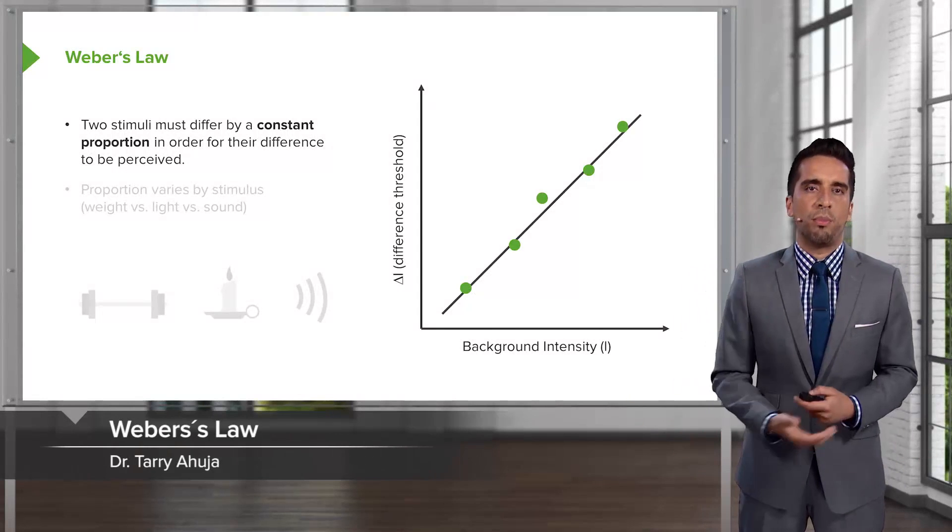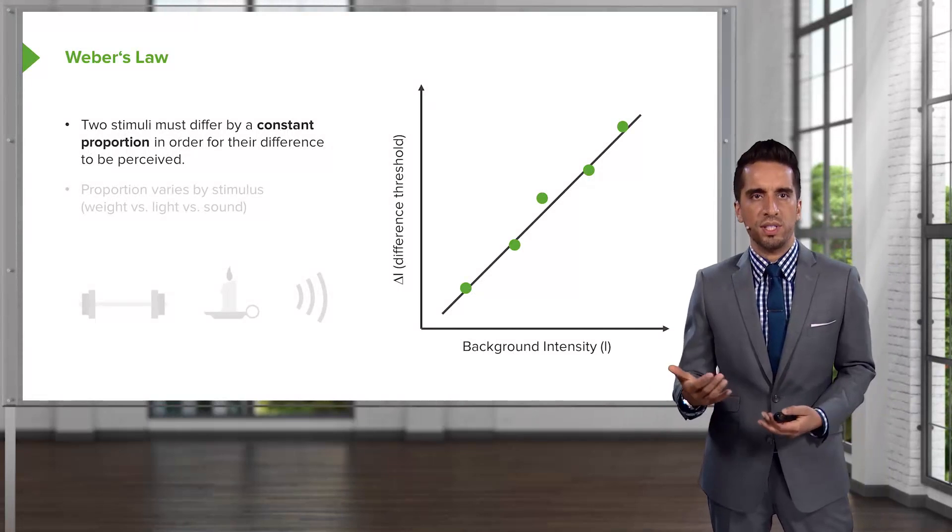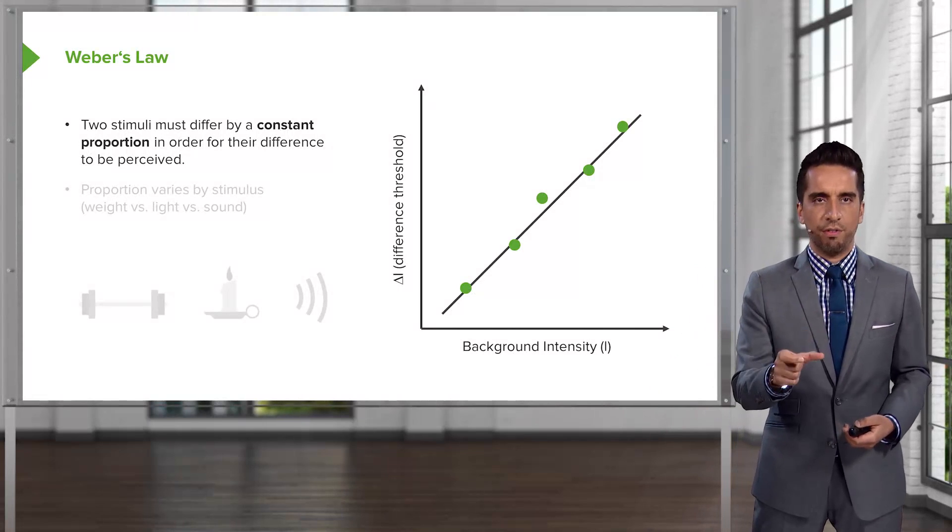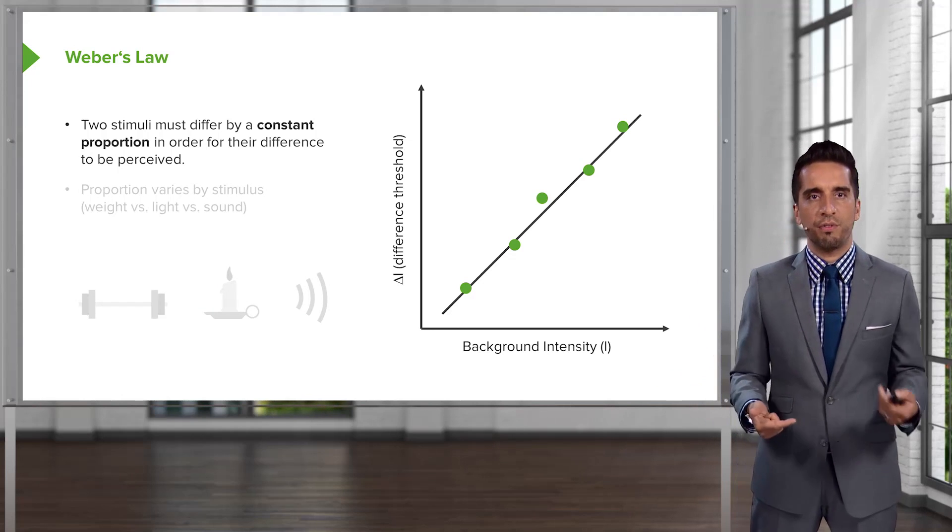So, this brings us to something called Weber's Law. Weber took a look at that relationship, and what it states is that two stimuli must differ by a constant proportion in order for their difference to be perceived.